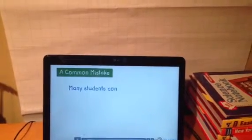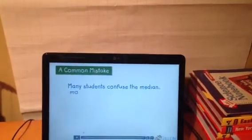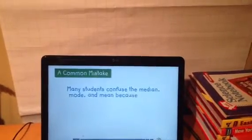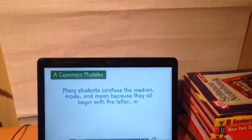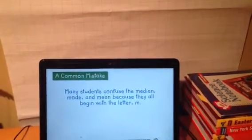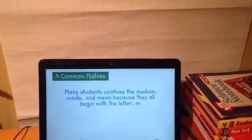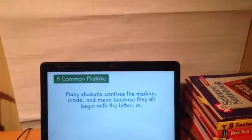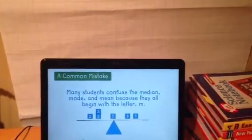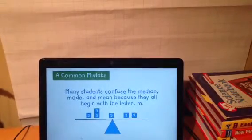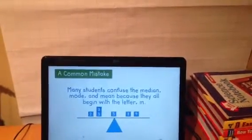A common mistake that most students make is confusing the median, mode, and mean because they all begin with the letter N and they all sound alike. Some students remember the mean or average as the meanest because it requires the most calculations. But the mean is the number that is a balancing point where half of the data is on one side and the weight of the other half on the other side, like this scale.